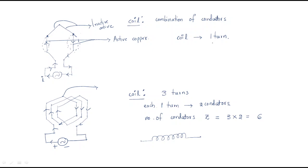For a one-turn coil, it consists of two conductors, so the number of conductors is two. For a three-turn coil, it consists of six conductors. We can use any number of turns — three, five, ten, or twenty — depending on the application.